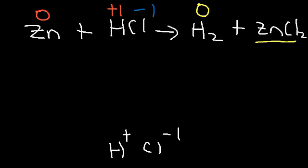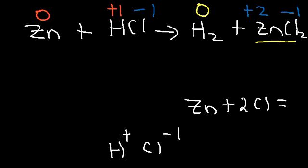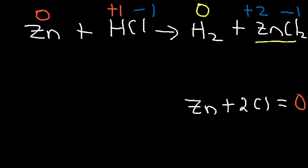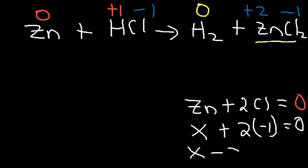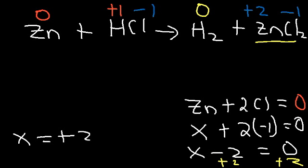In ZnCl2, we have a compound. Chloride has a −1 charge, and there are 2 of them, which means zinc has to have a +2 charge. If you're unsure, you can write an equation: Zn plus the 2 chlorine atoms should have an oxidation state of 0, because overall zinc chloride is neutral. Replace zinc with X and chlorine with −1. So X + 2(−1) = 0, giving X − 2 = 0. Adding 2 to both sides, the oxidation state of zinc is +2.